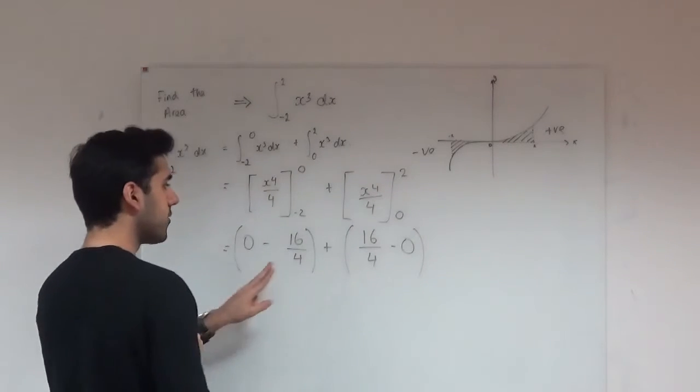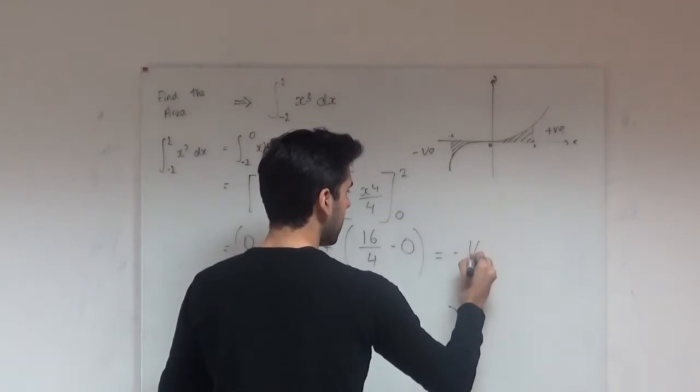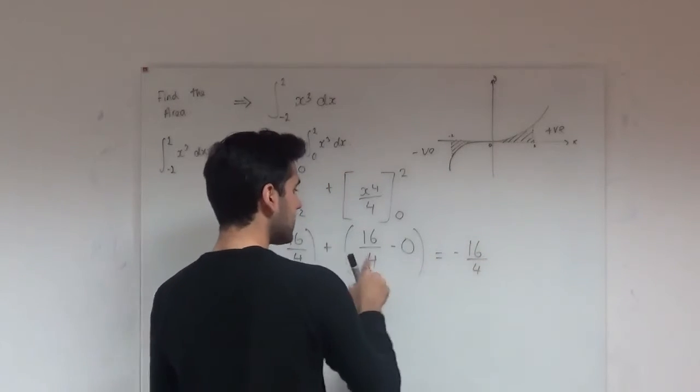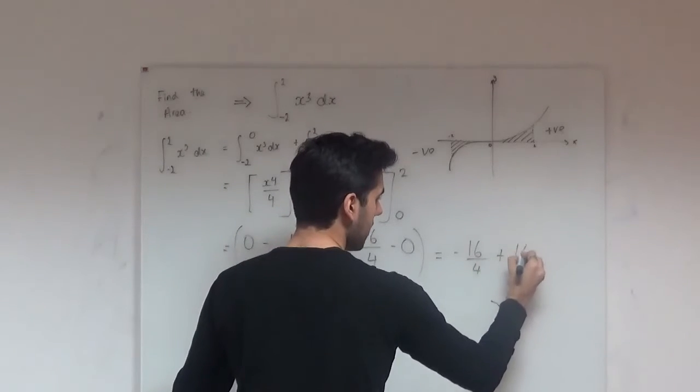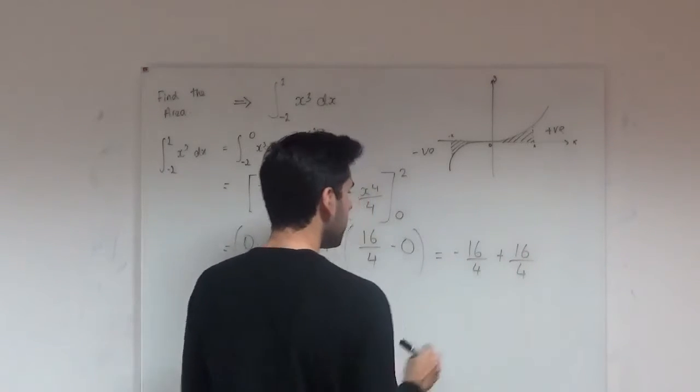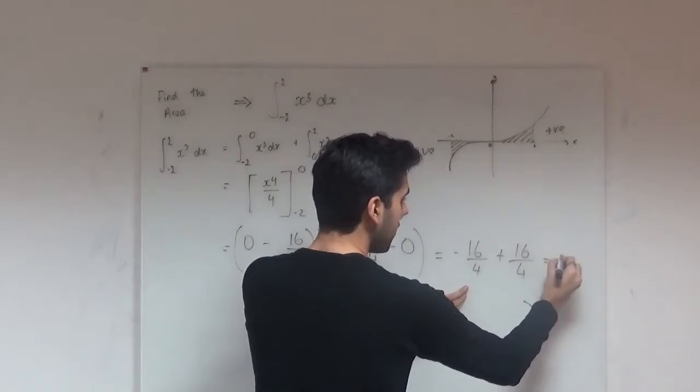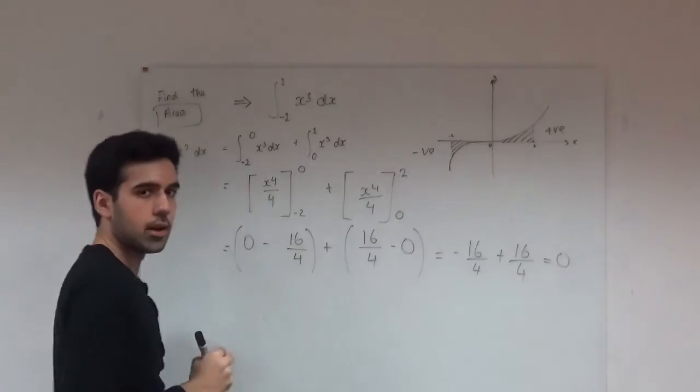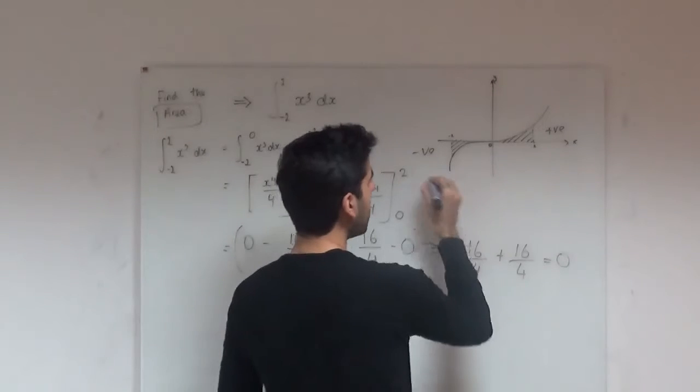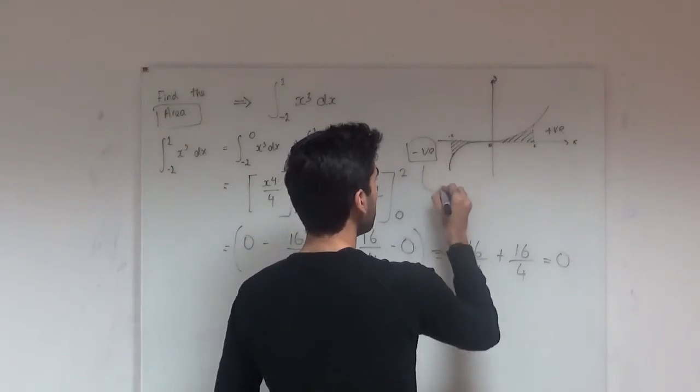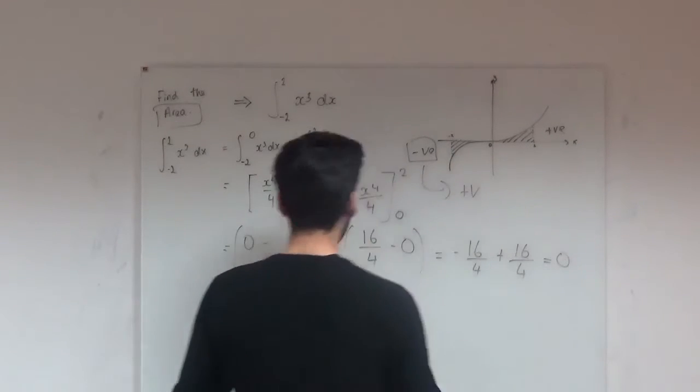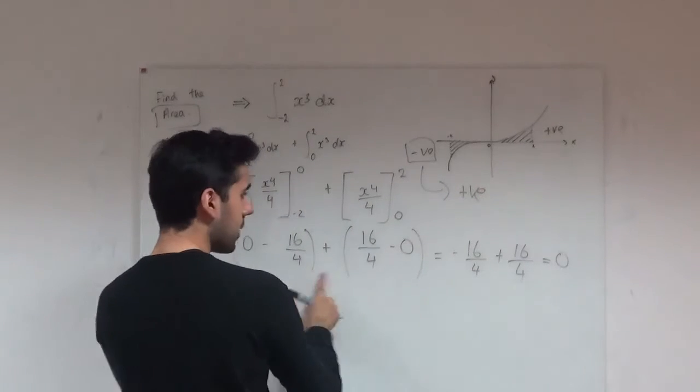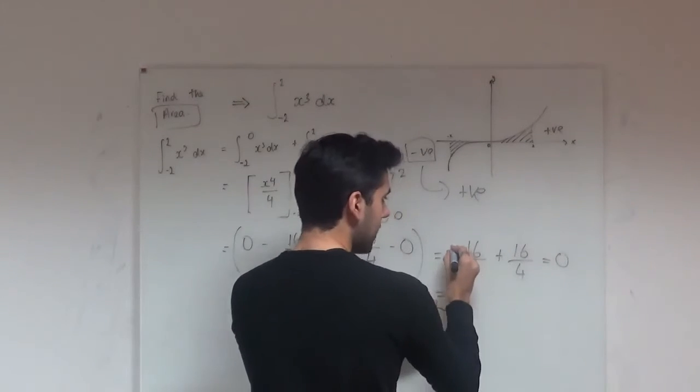Now this simplifies to minus 16 over 4 plus 16 over 4. Now if you look closely, this actually becomes 0, but the question told us to find the area. Now area cannot be negative. Whenever we have a negative area, we take it to be positive. So this bit over here becomes positive. So even though it's minus 16 over 4,